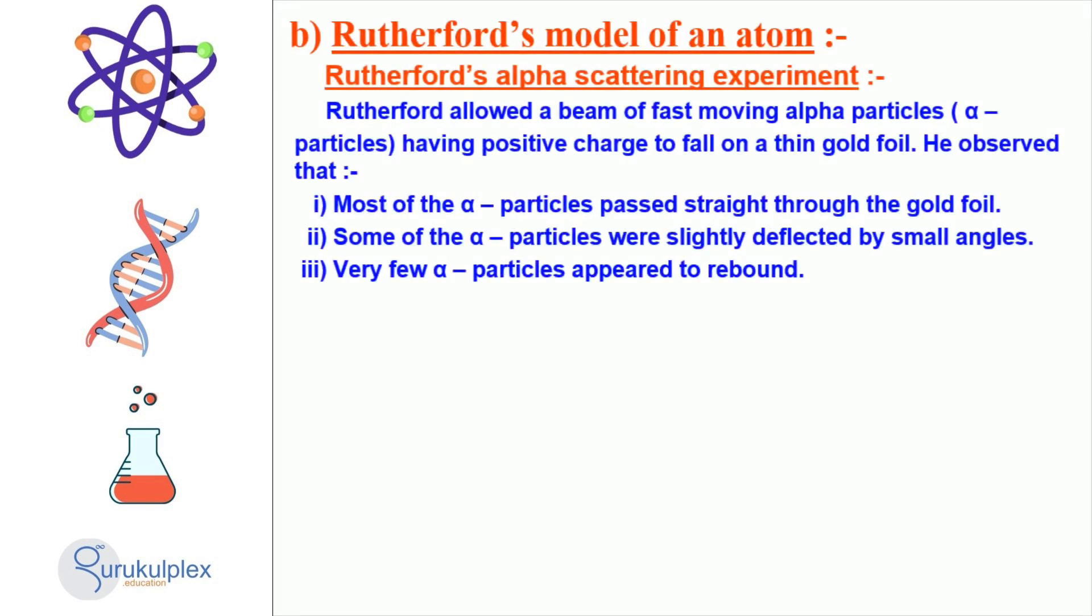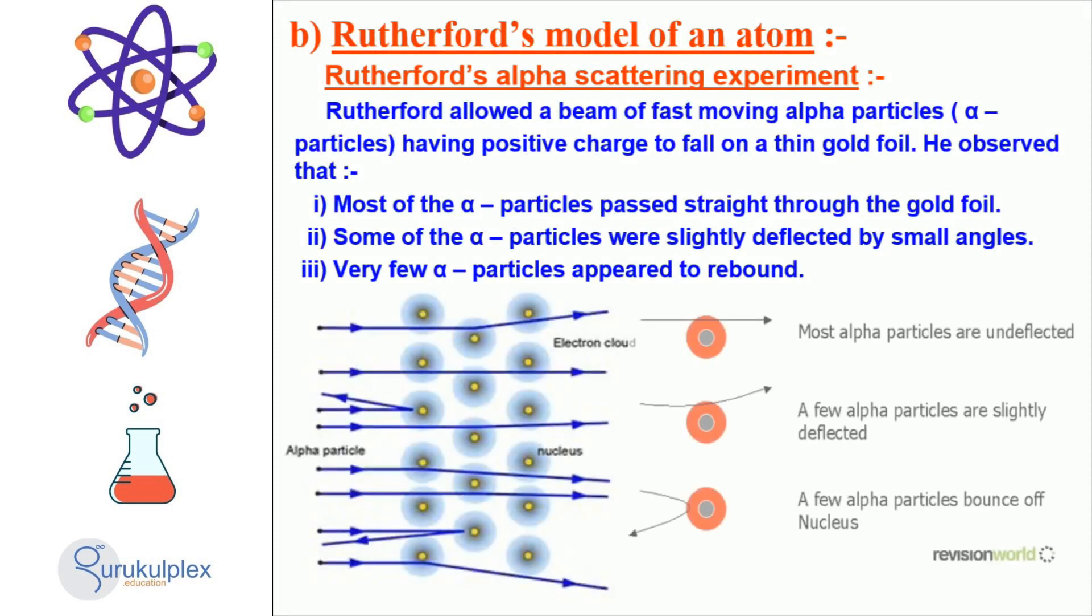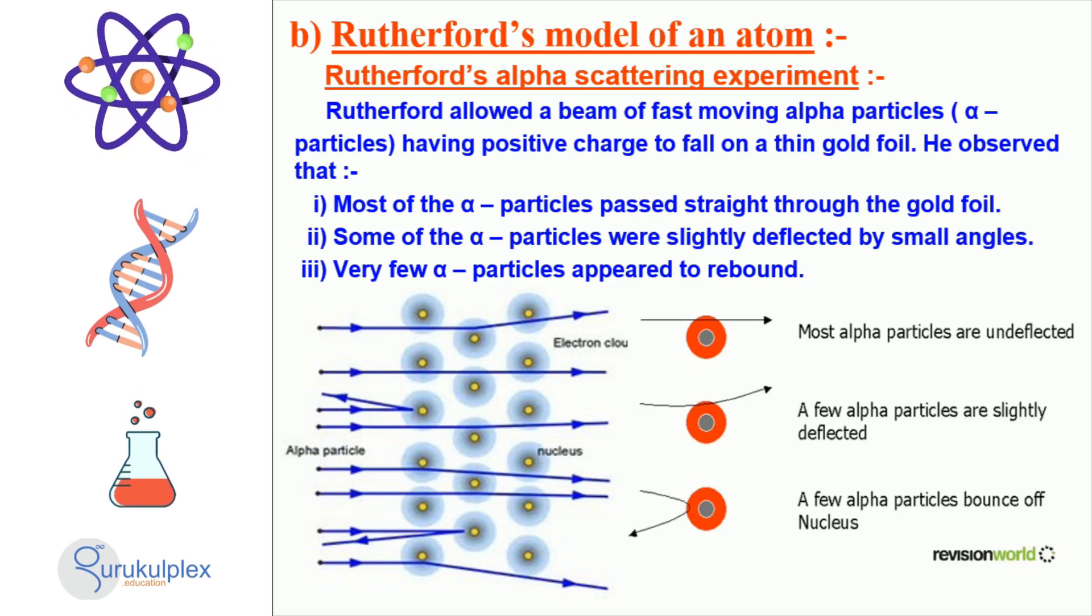Rutherford's model of the atom suggests it has a small, positively charged nucleus at the center, surrounded by a cloud of negative electrons. To verify this, Rutherford ran an alpha scattering experiment. He shot a beam of fast, positively charged alpha particles at a thin gold foil. Though many particles passed through, some were slightly deflected and a few even bounced off. This proved there was a small, dense nucleus with a positive charge within the atom, revealing there are distinct subatomic particles in the atom.